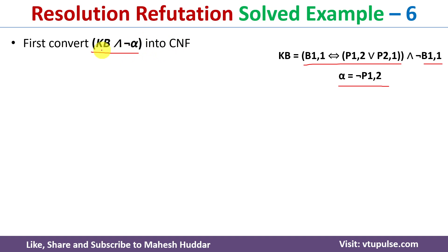Before that, we need to convert the knowledge base and negation of alpha — that is, the contradiction of the query — into conjunctive normal form. If it is already in conjunctive normal form, there is no need to do anything. If not, we need to convert it.